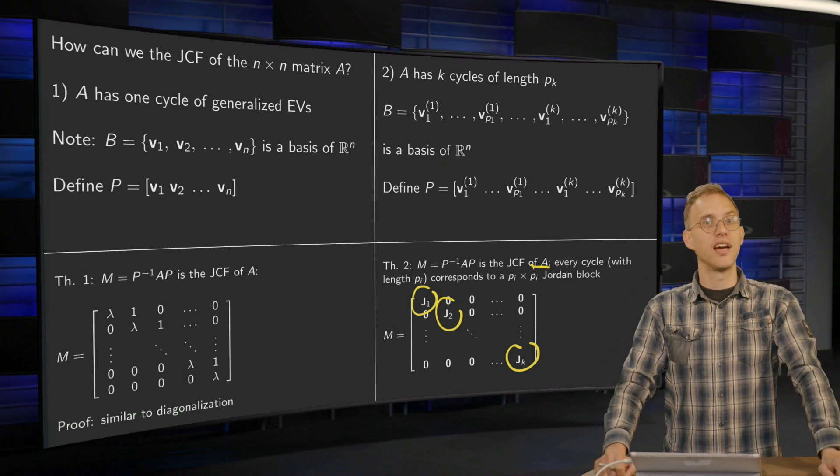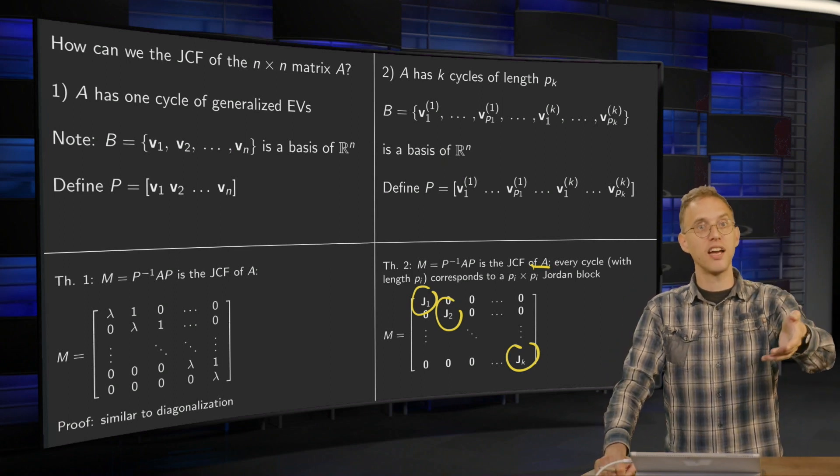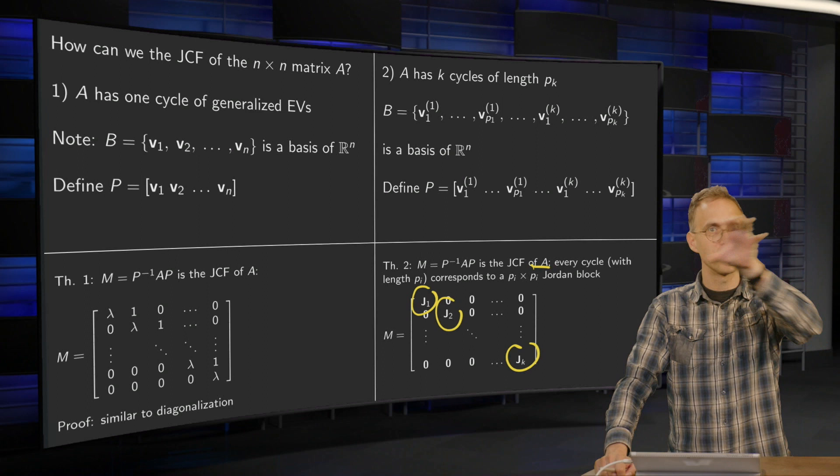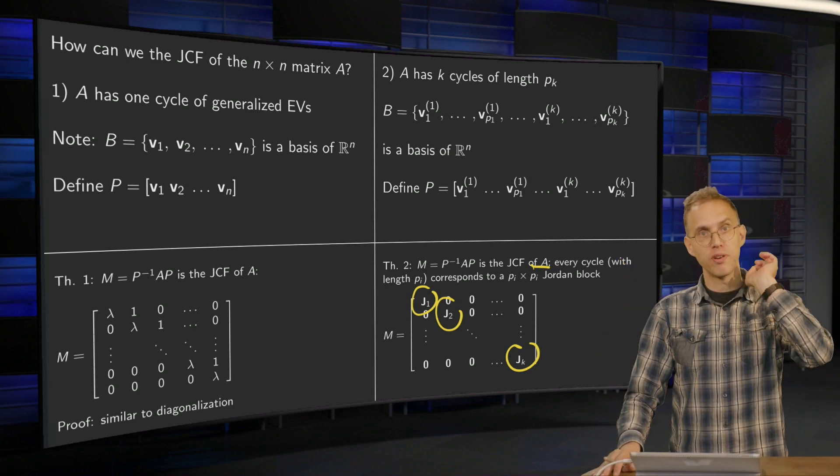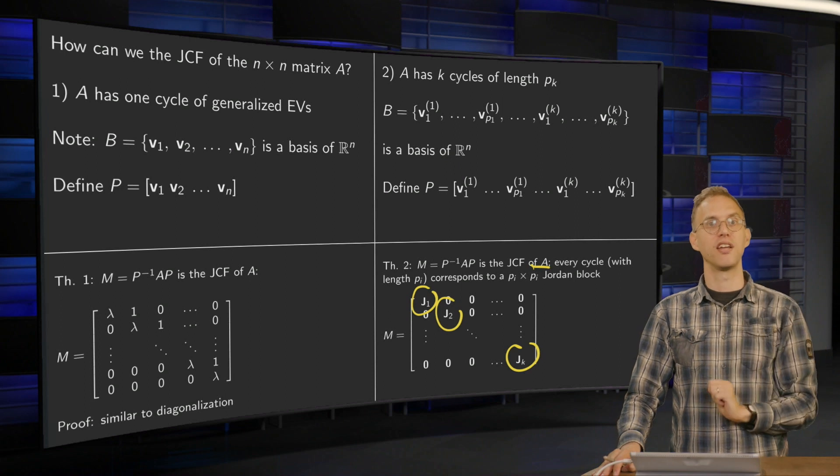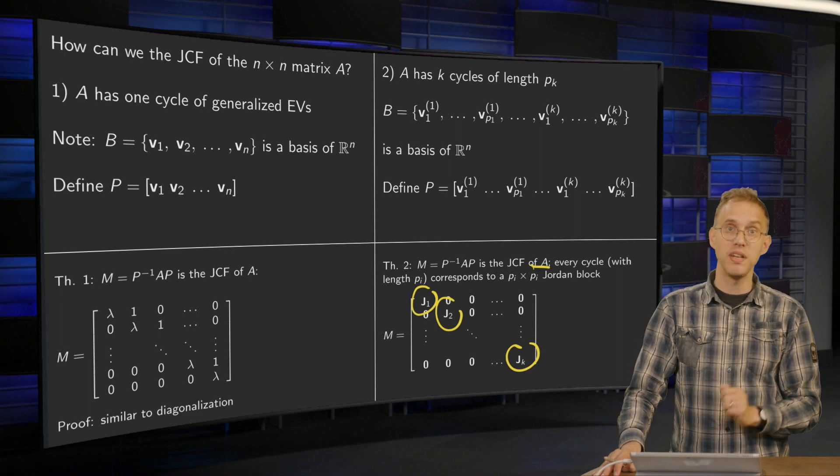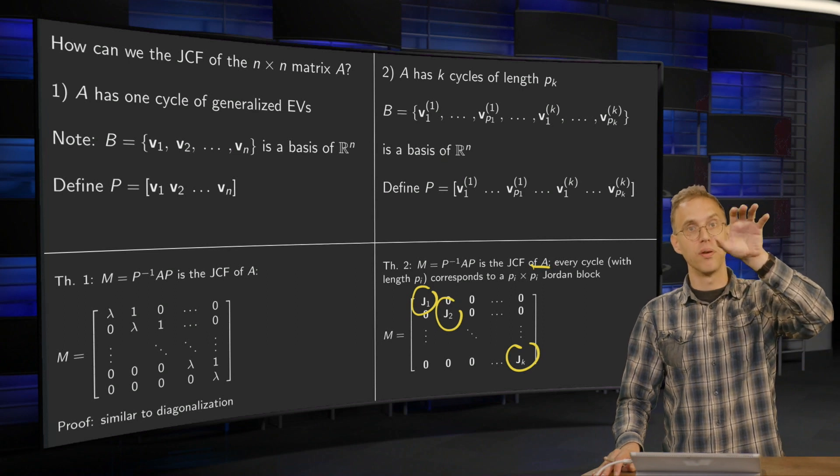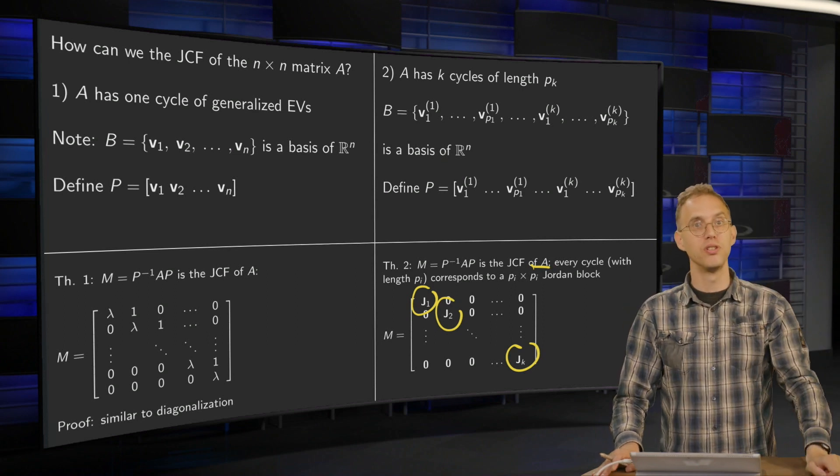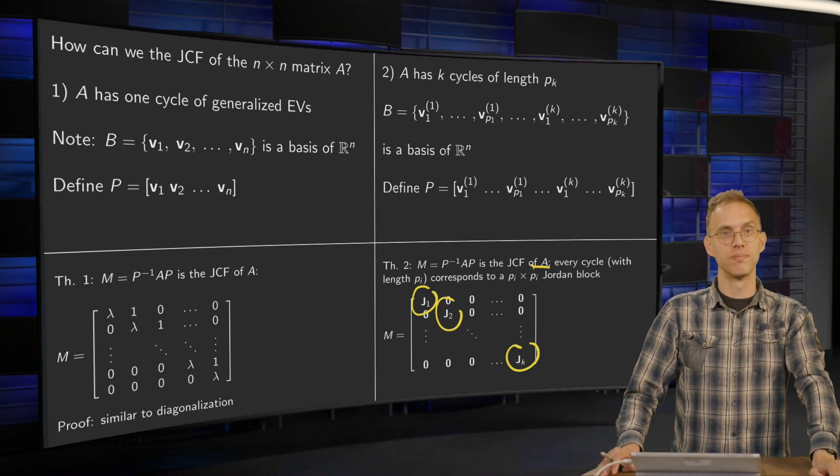As soon as you have your generalized eigenvectors, as soon as you have all your cycles belonging to your lambda, you're basically done. You just plug your generalized eigenvectors in your matrix P. There you have your P. And then your Jordan form just consists of all the Jordan blocks.